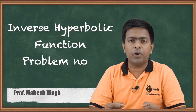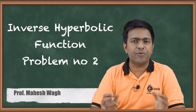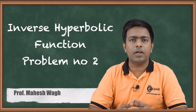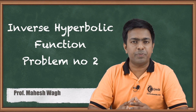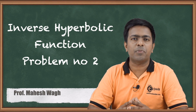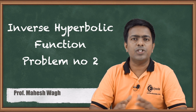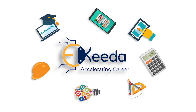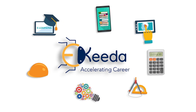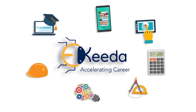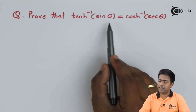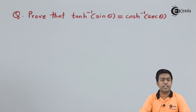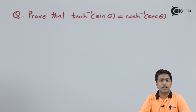Hello friends, inverse hyperbolic functions are a very important part of complex numbers. Today in this video we are going to see a problem based on inverse hyperbolic functions. We have to prove that tanh⁻¹(sin θ) is equal to cosh⁻¹(sec θ).